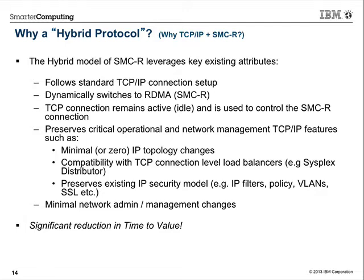Chart 14 describes the rationale for the hybrid protocol. It follows standard TCP/IP connection setup, dynamically switches to RDMA transparent to the application, and the TCP connection remains active and idle — with keep-alives if necessary. It preserves critical operational and network management. Day-to-day, you're just managing your IP topology — you don't provision new IP addresses, and your topology does not need to change.